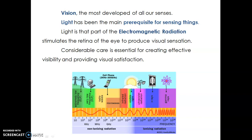We are going to start with few essentials — what is vision, what is light, etc. First we start from vision. Vision is the most developed of all our senses, more than hearing, smelling, and touching. Without vision we couldn't able to see what we have in front. So vision is the first important sense.